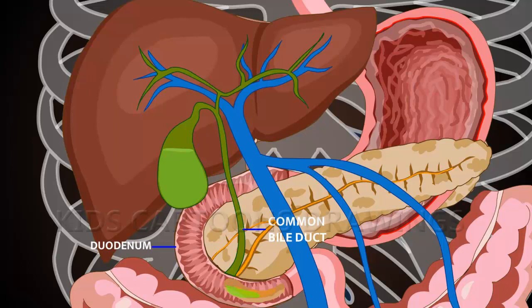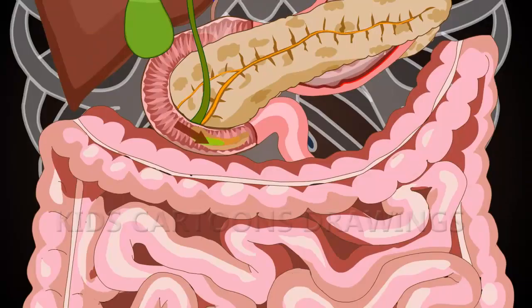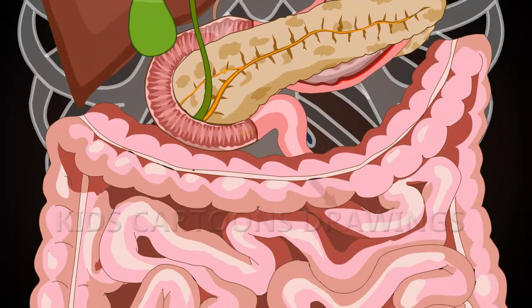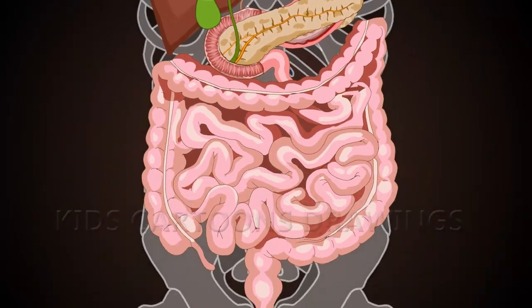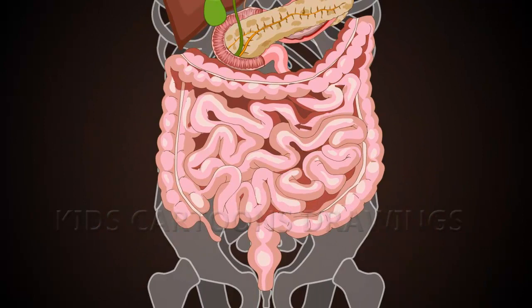Chyme continues to mix with digestive enzymes to digest fat, and moves through the duodenum into the jejunum. The jejunum is the second portion of the small intestine, where nutrients and digested food are absorbed into the bloodstream.